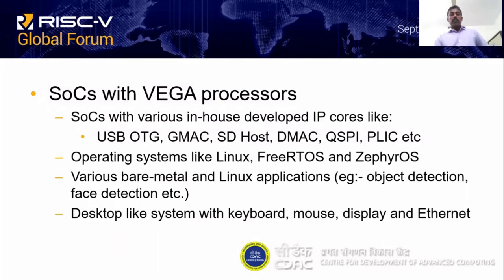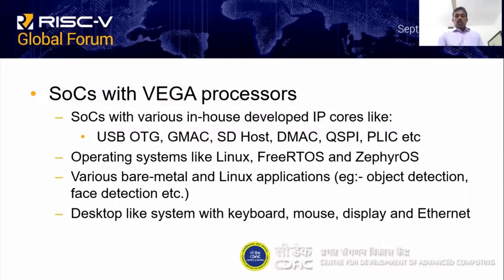We have developed a desktop-like system based on the Vega processors with keyboard, mouse, display, and Ethernet support. The system has GUI support, and we can play different games, browse the internet, do documentation, create folders, use a calculator, and everything else possible on a desktop PC can be done with the desktop system we developed using our processor.